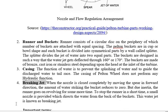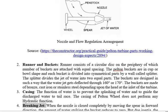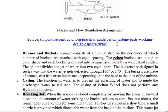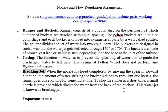To stop the runner in a short time, a small nozzle directs water from the back of the bucket. During normal operation the jet strikes the front of the bucket; to stop the runner, the braking jet hits the back of the bucket. This water jet directed at the back is known as the braking jet.